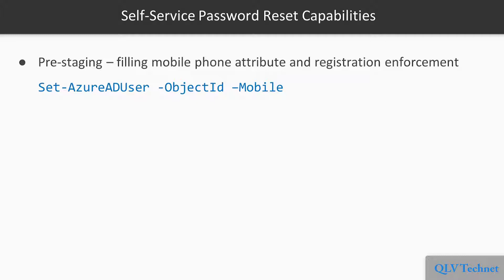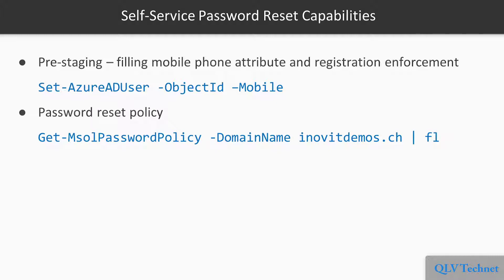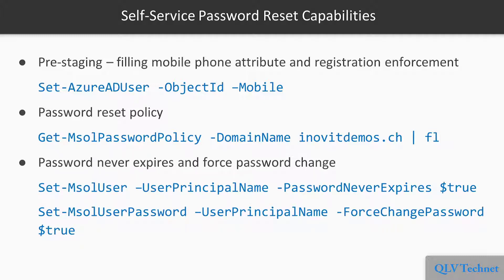First, we will use a pre-staging functionality for the self-service password reset. We set the mobile phone number of a user with the Set-AzureADUser cmdlet of the Azure AD version 2 PowerShell module. We will also see a way to enforce the registration of a user for self-service password reset. Second, we will view the password reset policy of our Azure AD tenant with the Get-MsolPasswordPolicy cmdlet. Afterwards we will configure a custom password reset policy. Third, we will set a user password to not expire and force a user to change the password.